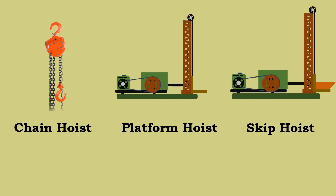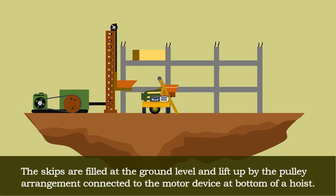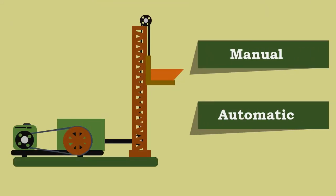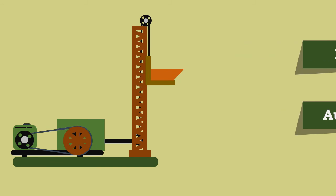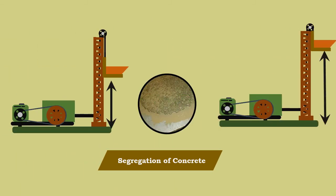The skips are filled at ground level and lifted up by a pulley arrangement connected to a motor device. After reaching a certain height, the concrete is placed either by automatic arrangement or by manual operations.